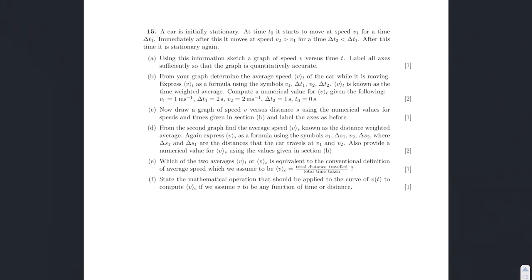So 15. A car is initially stationary. At time t0 it starts to move at speed v1 for time delta t1. Immediately after this it moves at speed v2 greater than v1 for time delta t2 less than delta t1. After this time it's stationary again.